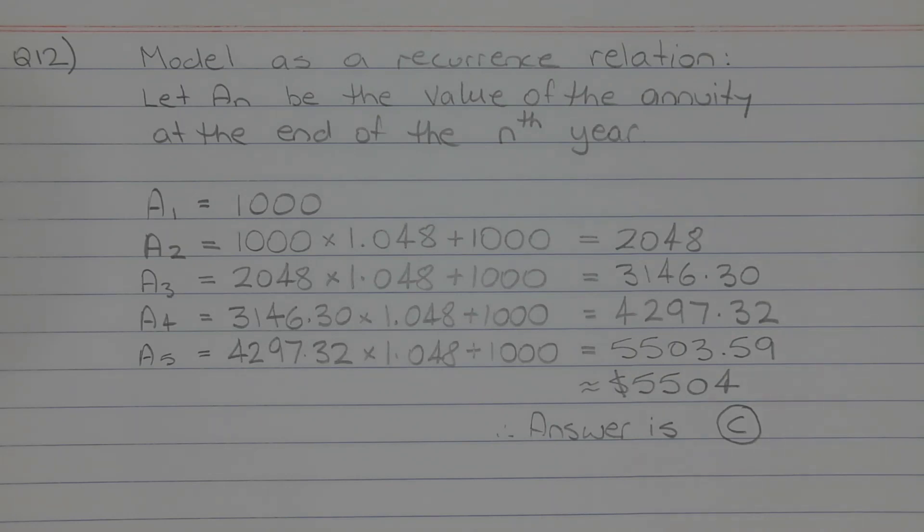The value of the annuity at the end of the second year is found by taking the value of the annuity at the end of the first year, which is $1,000. It's going to be increased by 4.8%. So we're going to have 1,000 times 1.048 and then Josephine is going to deposit another $1,000 and that equals 2048.